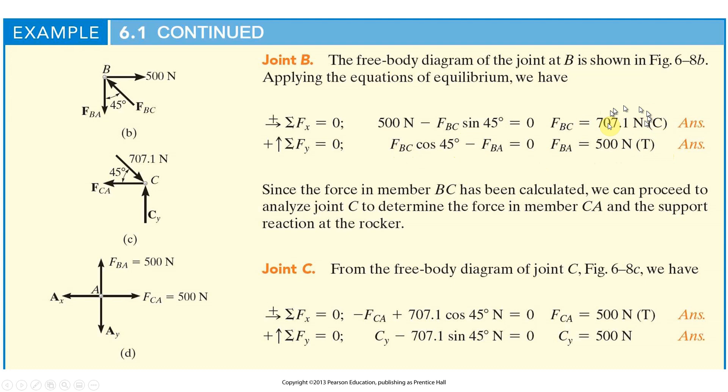So this times the cosine gives you 500 newtons. So now we got those two, we got the 707 newtons acting at point C. That'll be 500 newtons acting down, 500 newtons acting to the right.